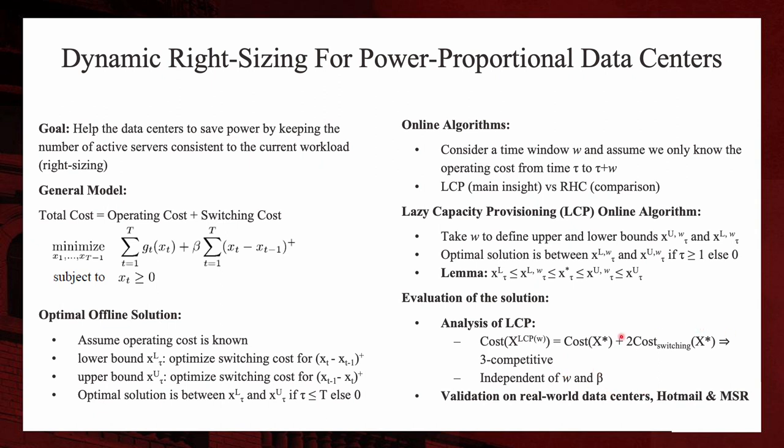The authors also managed to test their algorithms on real world data centers, the Hotmail and the Microsoft Research. And the algorithm showed potential to save costs for the data centers. The authors also claimed that the competitive ratio is even better in practical applications.